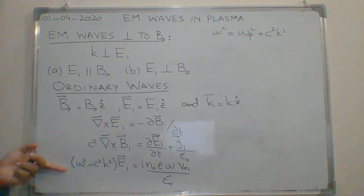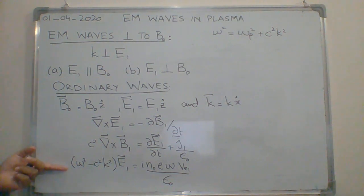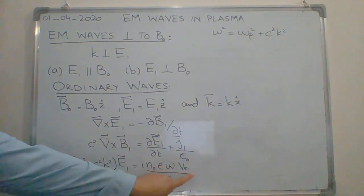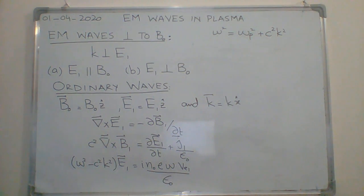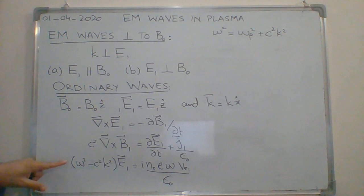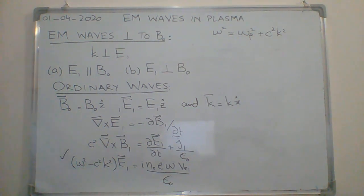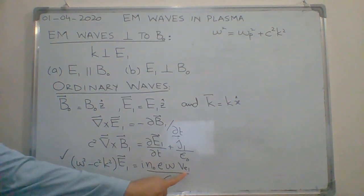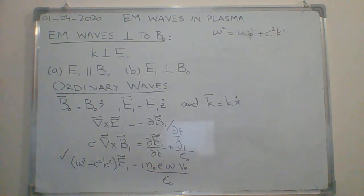This is the equation we have already used. Now we are going to find V1 from the equation of motion. I will use this equation and then substitute the value of V1 obtained from the equation of motion.